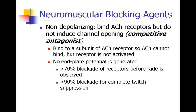So there's no end plate potential generated and you don't see a fasciculation — you just block the muscle from being activated by acetylcholine. You may have heard that you could have up to 70% blockade of your neuromuscular junction receptors before you see any fade on the twitch monitor, and you probably need about 90% of receptors blocked before you have complete twitch suppression.